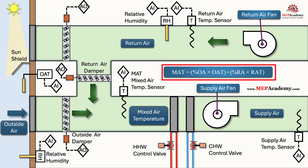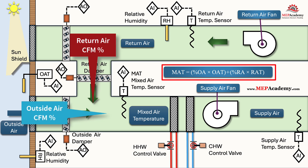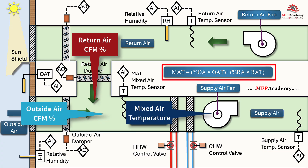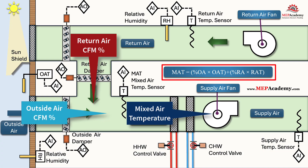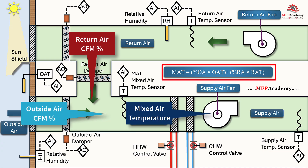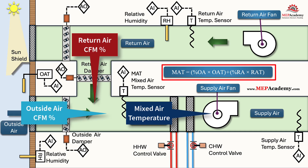This formula is based on dry bulb temperature for a dry coil. The mixed air temperature is a weighted average based on the proportion of outside air and return air: Mixed Air Temperature = (% Outside Air × Outside Air Temperature) + (% Return Air × Return Air Temperature).